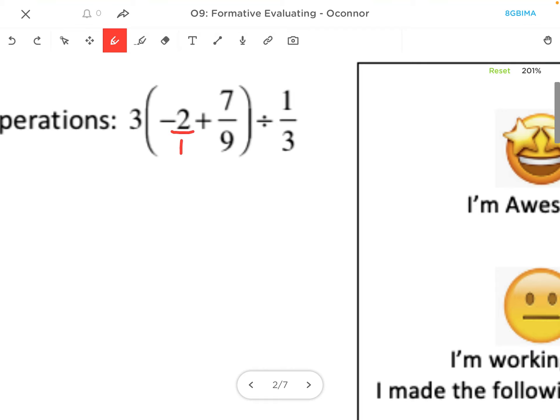I need a common denominator, which is going to be 9. So I'm going to multiply the top and bottom by 9. So I will rewrite that part as negative 18 over 9 plus 7 over 9, and I'm just rewriting everything else in the problem.